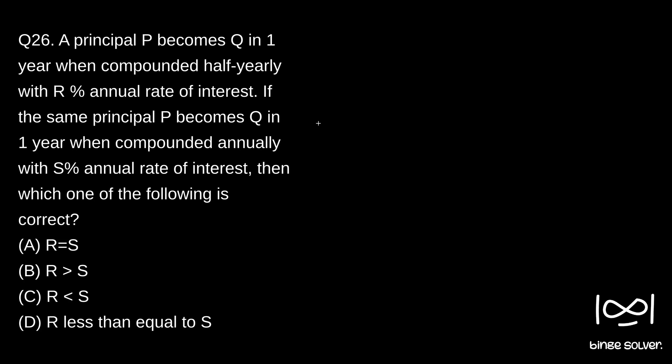So if you're familiar with the concept of compound interest, you can right away see that compounding half-yearly is better for us. And even if after compounding annually we are getting the same interest, that means S has to be greater than R. So if you're familiar with the concept, you can right away say S is greater than R and the solution to question 26 is C.